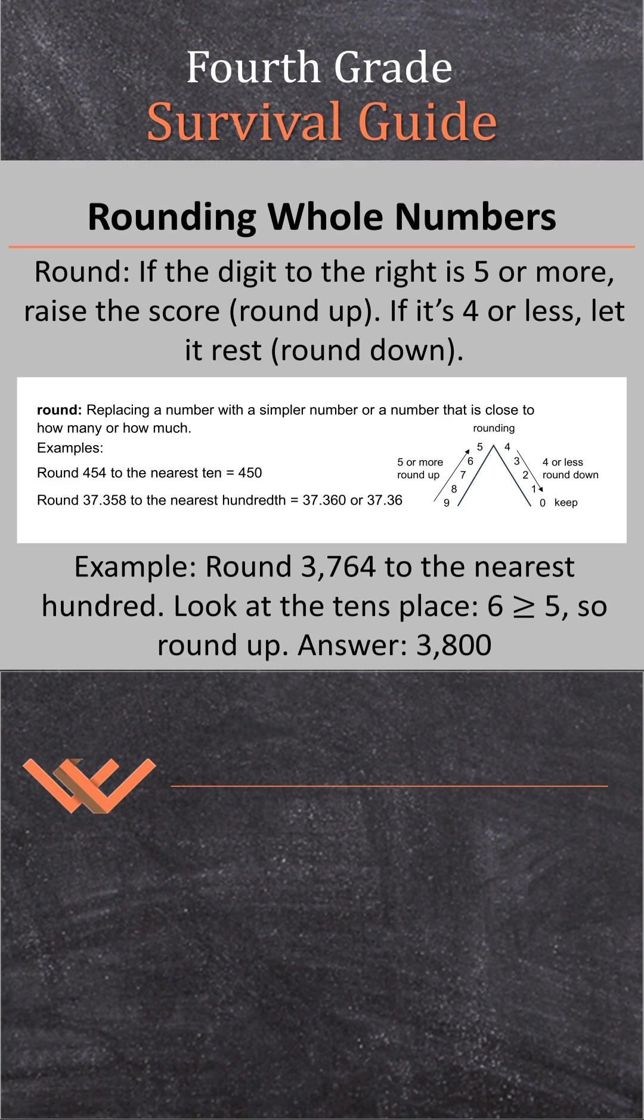Here's an example: round 3,764 to the nearest hundred. Look at the tens place. Six is greater than five. So we round the answer up to 3,800.